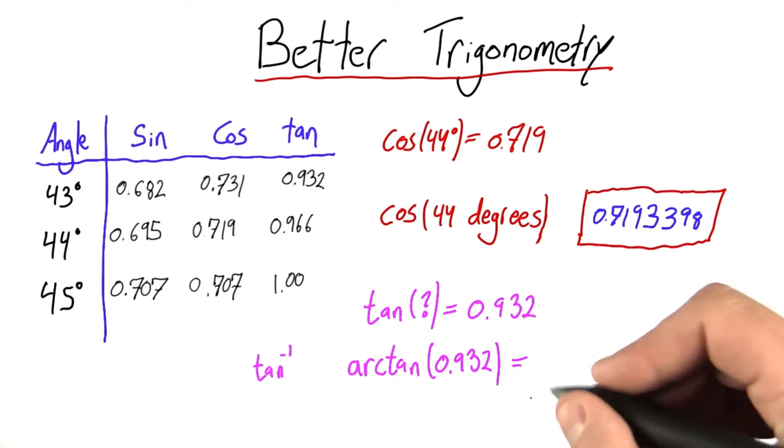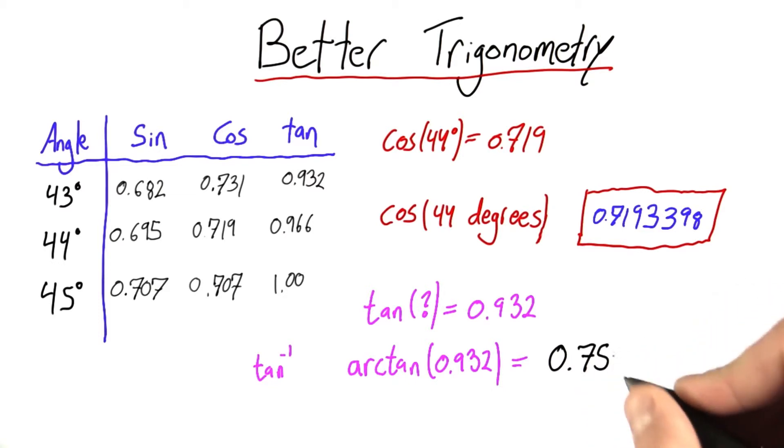what we'll get is the following answer: 0.75... radians. Now this is strange. This is a unit you may have never seen before, or maybe you have.